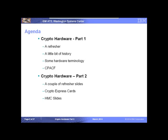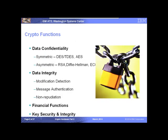Last month we talked about hardware. We focused on the CPAC app, the CP Assist for Cryptographic Function. This month we're going to focus in on the Crypto Express cards and what they bring to the table, including taking a look at some of the configuration that you need to do to get the crypto cards available to your LPARs.